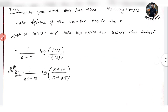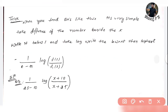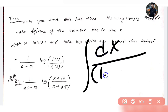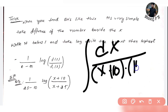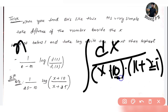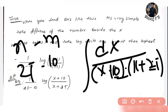The trick is very simple. Check the question: dx divided by (x plus 10) into (x plus 25). I will take the difference between the two constants: 25 minus 10, which gives me 15.